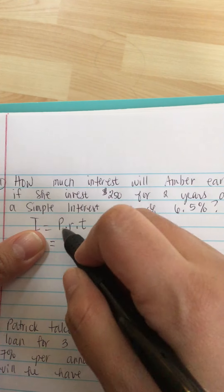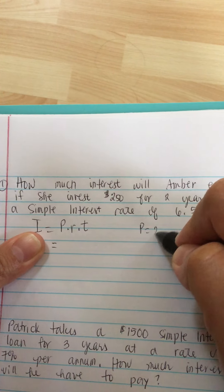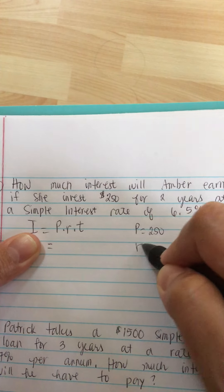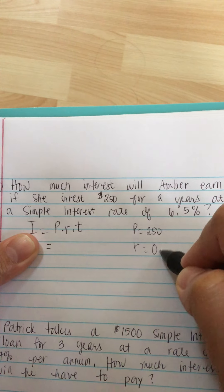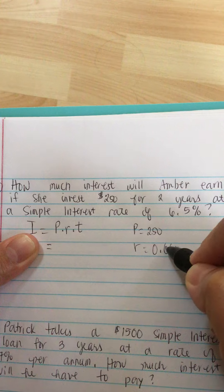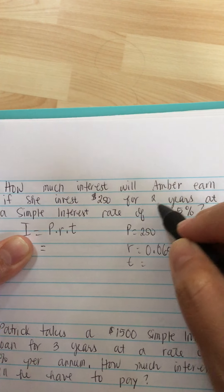So we have P. P is equal to $250. R is equal to 0.065. And T is equal to 2 years.